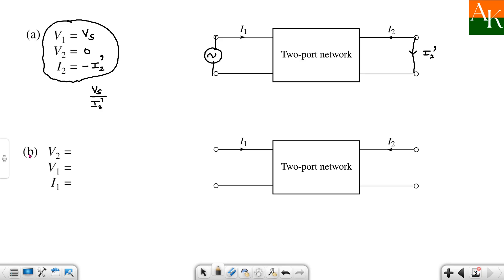Now for case B, V2 equals Vs, which means you're exciting port 2. V1 has to be zero, which means port 1 is short-circuited.